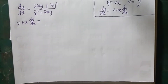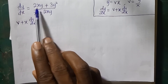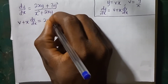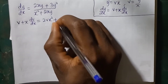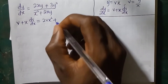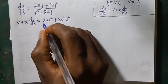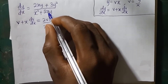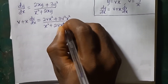This is equal to the right-hand side, where we substitute for y. We have 2x times y, meaning 2x times vx, which gives 2vx squared, because x multiplies x. Plus 3y squared, meaning 3 times vx squared, giving 3v squared x squared. Divided by x squared plus 2x times y, meaning 2vx squared.